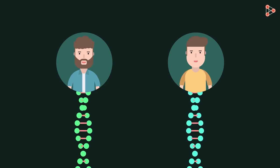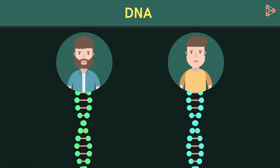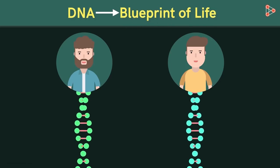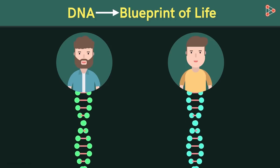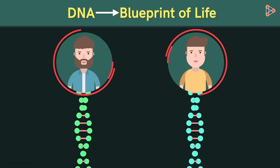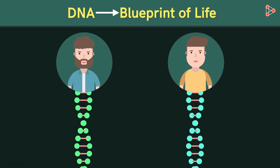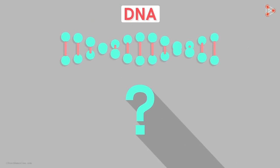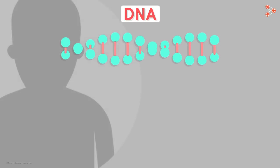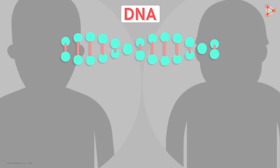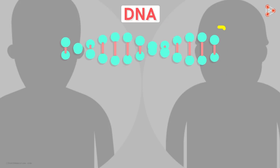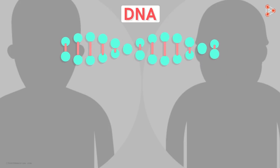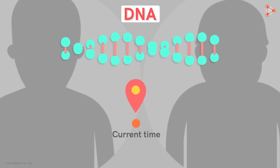Does every person really have a unique DNA? Of course! DNA is termed as the blueprint of life. It's a specific set of instructions that gives rise to the characters that are seen in the organisms. But this wasn't known back then — so who discovered that DNA is so important? Which scientist or scientists contributed towards finding out that DNA is the code for all the characteristics in us?